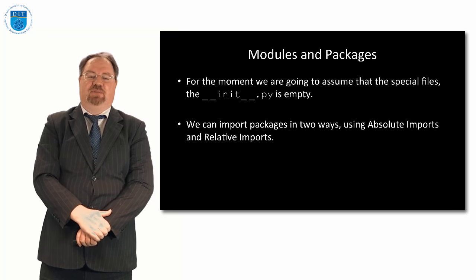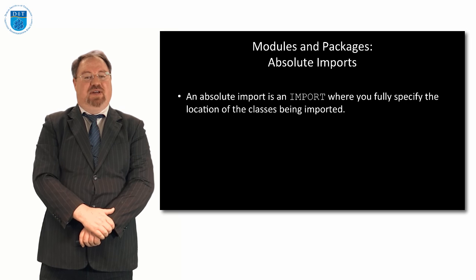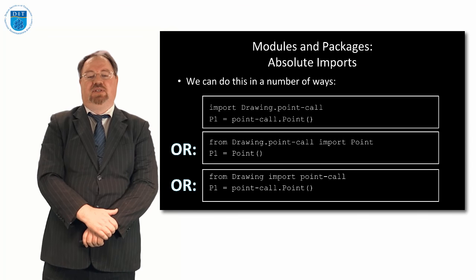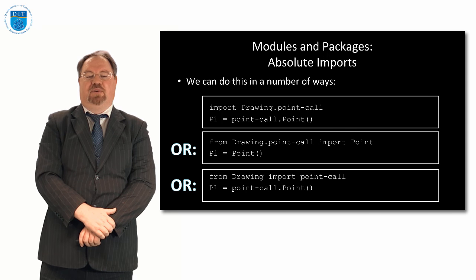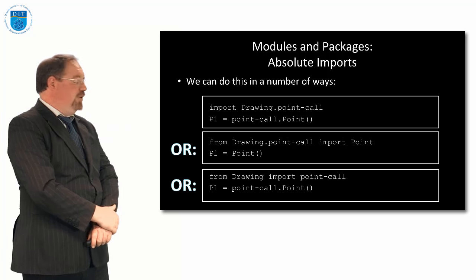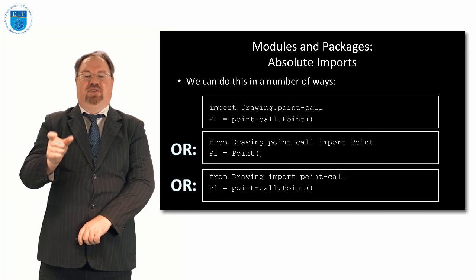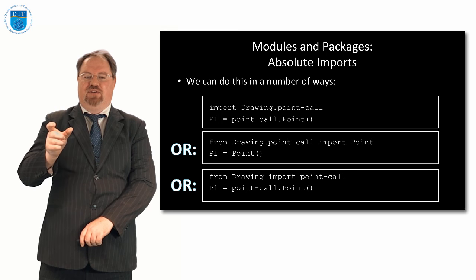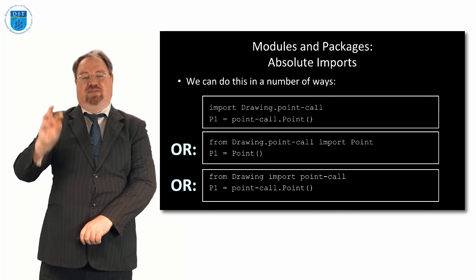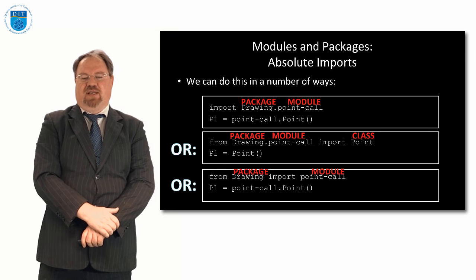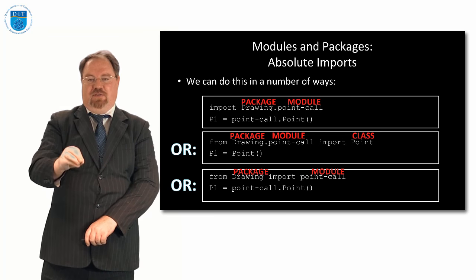Absolute imports specify exactly where we're getting a file from. We can say import drawing.point_call, or from drawing.point_call import point, or from drawing import point_call. Drawing is the name of the folder — the package — and point_call is one of the files in that folder — the module. We can import classes from each file. Drawing is the package or folder, point_call is the module or file, and point is the class we're importing from a specific file in a specific folder.